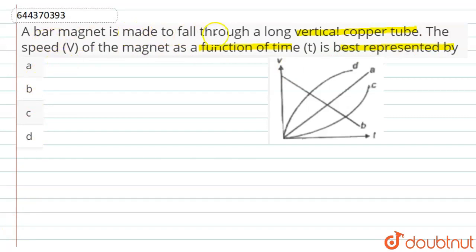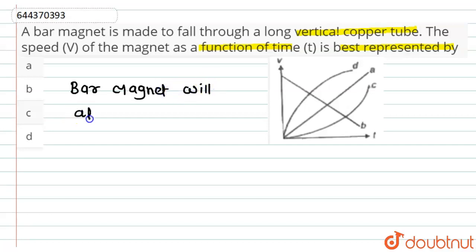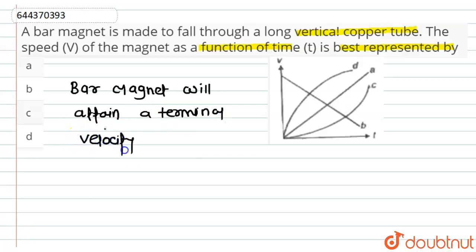So when the bar magnet is made to fall through a long vertical copper tube, the bar magnet will attain a terminal velocity. It attains terminal velocity because as the velocity increases, the change of flux will also increase.